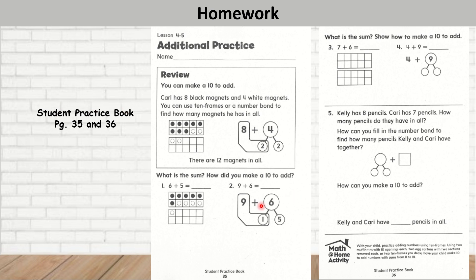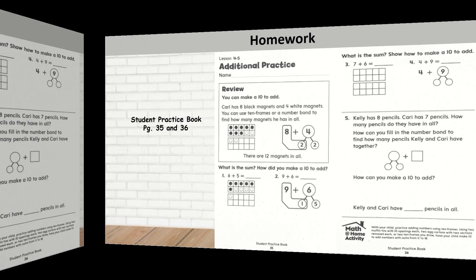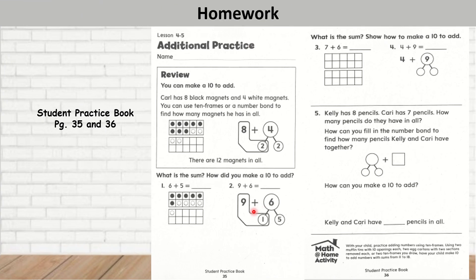Please complete it and then continue watching the video to take up the answers. Let's take up the answers. So here I have question number 1: 6 plus 5. Simply just count the circles. The answer will be 11. Number 2: 9 plus 6. Remember 9 plus 1 is 10, plus 5 more gives you 15. What is the sum? Show how to make a 10 to add.